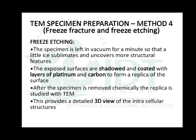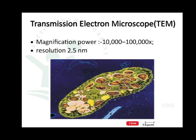After the specimen is removed chemically, the replica is studied with transmission electron microscopy, providing a 3D view of intracellular structures. These are the four methods used for specimen preparation. The magnification power of the electron microscope is approximately 10,000 to 100,000 times and resolution is 2.5 nanometer.